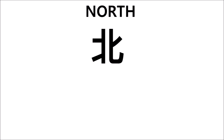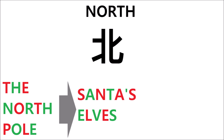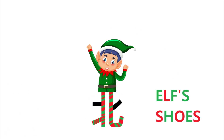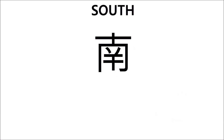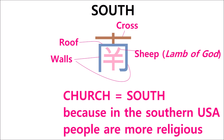First of all, north. It makes me think of the North Pole, where Santa's elves are living. And this is a picture of an elf's legs and an elf's shoes, like on the cover of the movie Elf. Now south — I see this as a church. That's the walls and the roof, and that's a cross on top. And this thing inside, it looks like a sheep. This helps me remember south, because in the southern US, people are more religious.